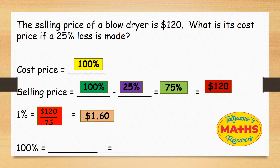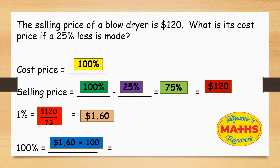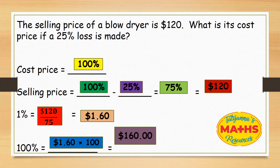So we want to calculate the cost price given the loss. The cost price is 100%, so we're going to take 100 and multiply by $1.60, which gives us $160.